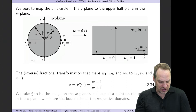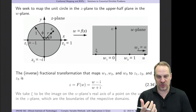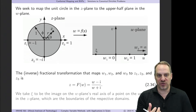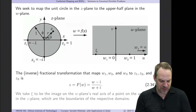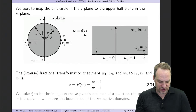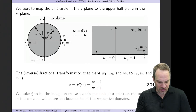So let's get the inverse fractional transformation. That implicit relationship is equation 2.1 — substitute in z1, z2, z3 and w1, w2, w3. You get z as a function of w and w as a function of z. The inverse fractional transformation is z equals capital F of w: it's w minus i over w plus i. That's the fractional transformation that accomplishes this mapping.